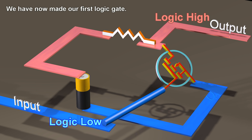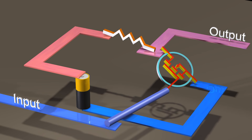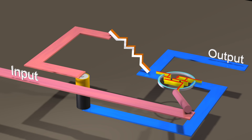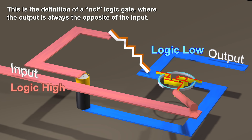We have now made our first logic gate. When the input of our circuit is logic low, the output of our circuit is logic high. When the input of our circuit is logic high, the output of our circuit is logic low. This is the definition of a NOT logic gate, where the output is always the opposite of the input.